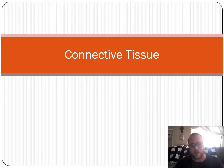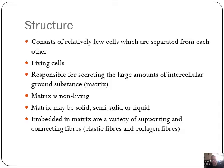Connective tissue consists of relatively few cells which are separated from each other. Those cells produce a substance of some sort, and that substance is what we then recognize as the actual tissue itself. They have living cells responsible for secreting large amounts of intercellular ground substance - I'll probably put that in your weekly quiz. What is secreted from these widely-separated living cells? Matrix, or intercellular ground substance. You need to know the word matrix.